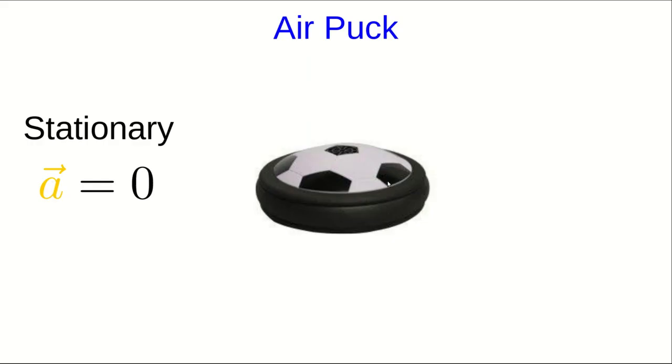So suppose we have an air puck that's just hovering stationary. Because it's stationary and staying that way, we know that the acceleration is zero. Now, you can verify by picking up the air puck and dropping it, which you shouldn't do, you'll probably break the air puck, that it will accelerate down if you do so. And so we know that there must be a gravitational force acting on the puck. The Earth is what's exerting that force. But when it just sits stationary and hovering, we know that that can't be the only force, because we know the acceleration is zero.